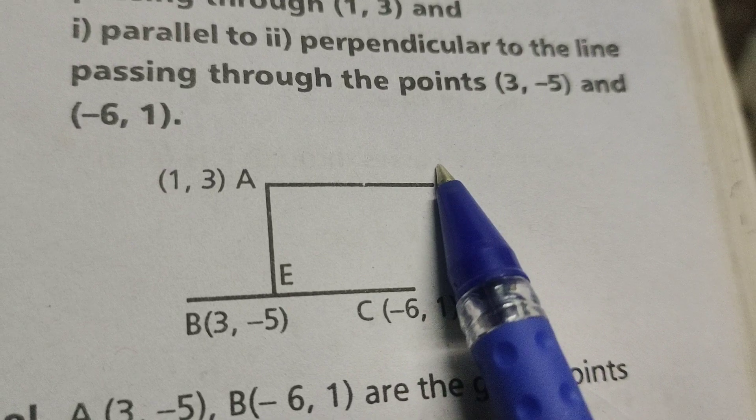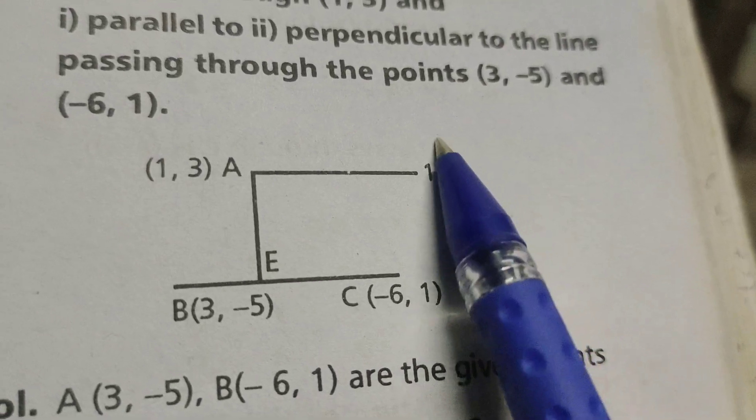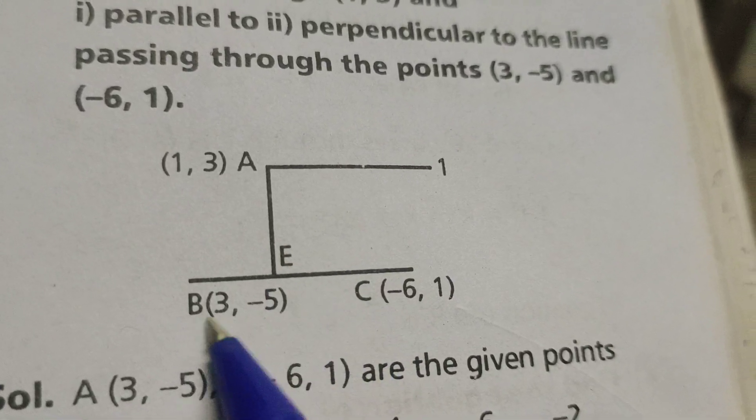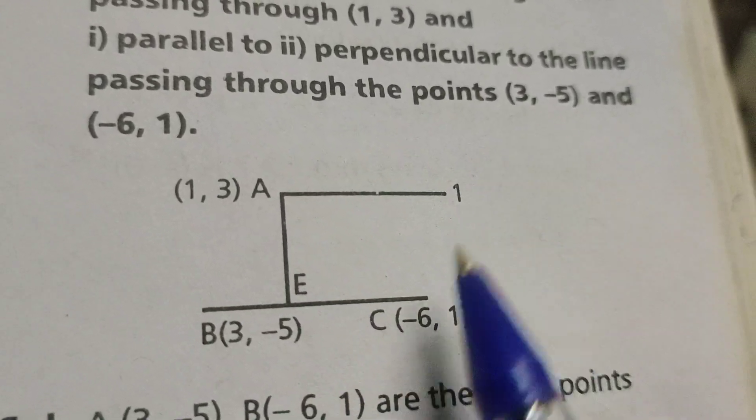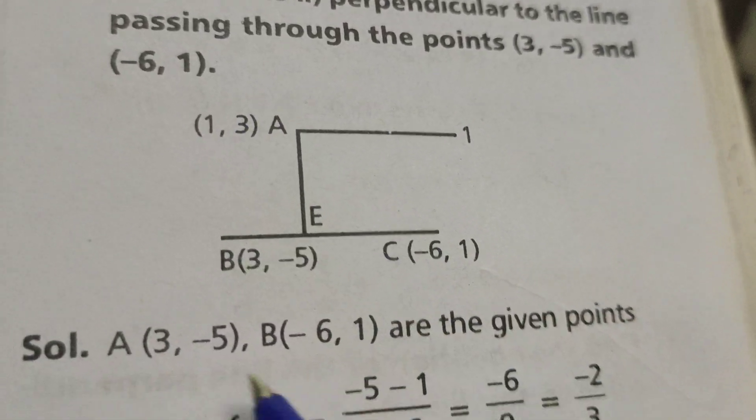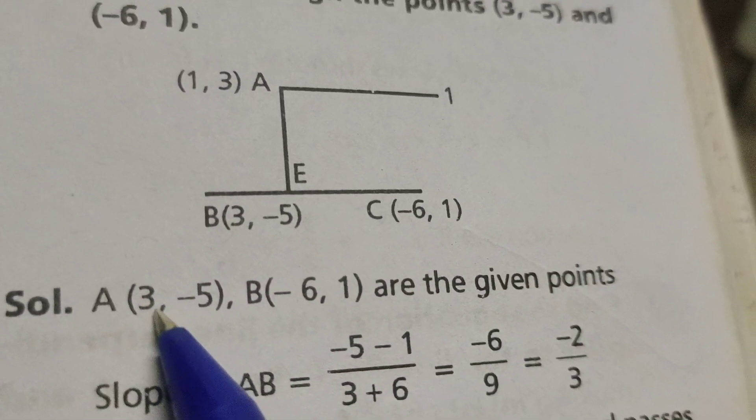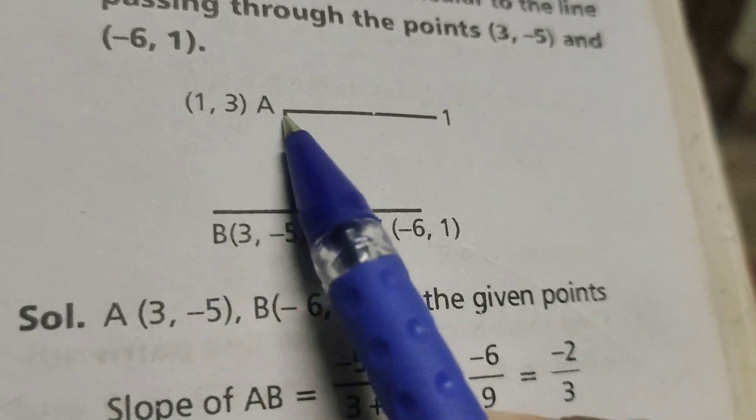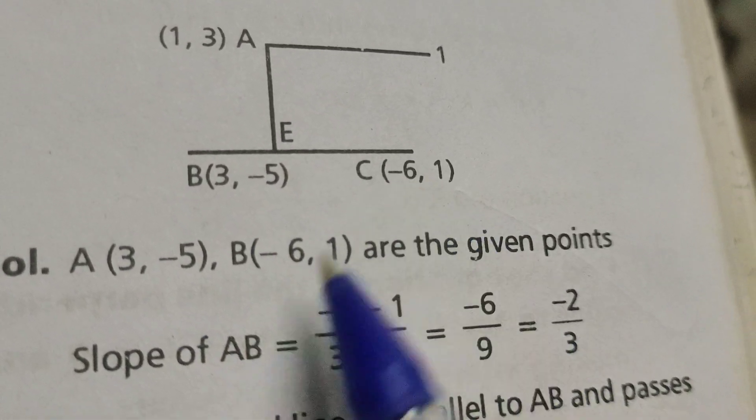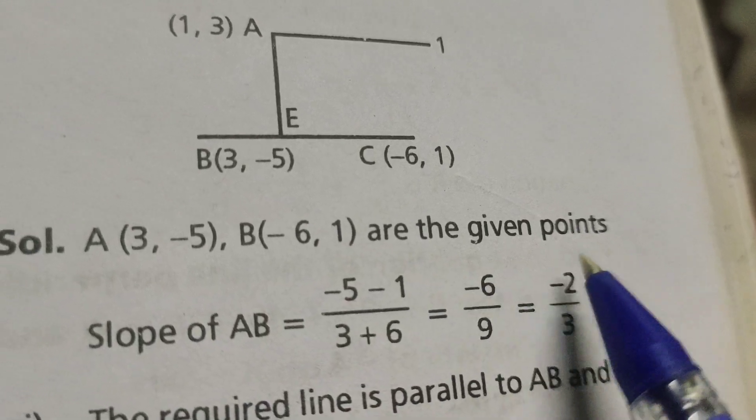Now this is one. Here in this perpendicular to two points consider B and C, these points. First here the point A (3, -5) considered and B (-6, 1) are the given points.